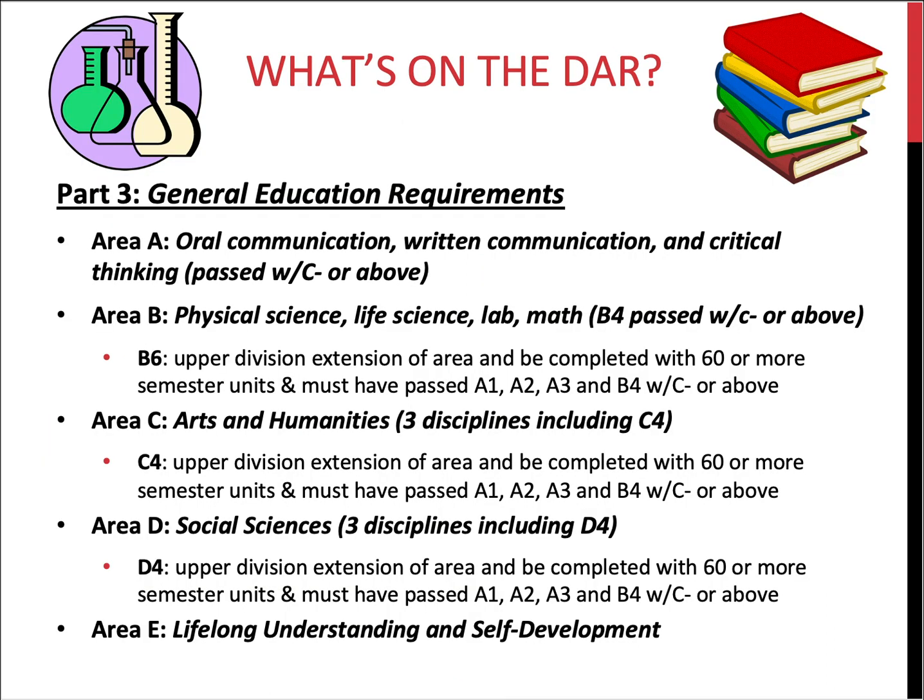Now let's cover the general education requirements, starting with the lower division. Area A consists of oral communication (A1), written communication/composition (A2), and critical thinking (A3). All three of these courses must be completed with a C- or better.